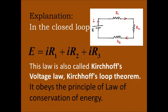Explanation: In the closed circuit, the EMF is equal to the sum of the potential differences — that is, I×R1 + I×R2 + I×R3. This law is also called Kirchhoff's voltage law or Kirchhoff's loop theorem. It obeys the principle of conservation of energy.